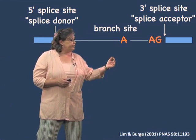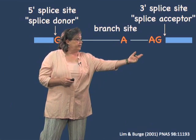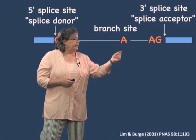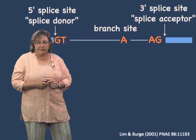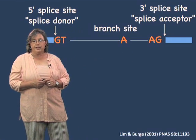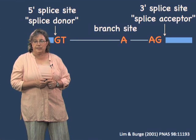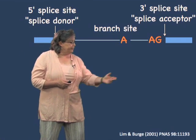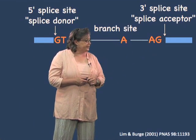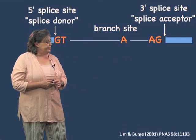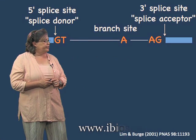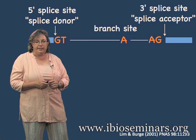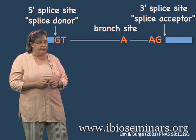Much further downstream, actually close to the other end of the intron, is an adenosine called the branch site. We'll be talking about what that branch site does in part 2 of the lecture. And then at the very end of the intron is the AG, which is the last two nucleotides of the intron at the 3' splice site, or the splice acceptor.